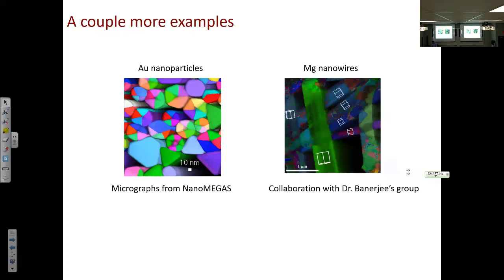Regarding sample preparation: for powders like soil, the approach is to mix with ethanol, disperse well, drop onto a TEM grid, and load into the TEM — fairly straightforward. For bulk samples like rocks, we use focused ion beam (FIB), a nanoscale knife that cuts a 100 nm thick slice and places it on the TEM grid. For metals, electropolishing works. For soft materials like polymers, a microtome with a diamond knife can cut thin slices, similar to slicing prosciutto.